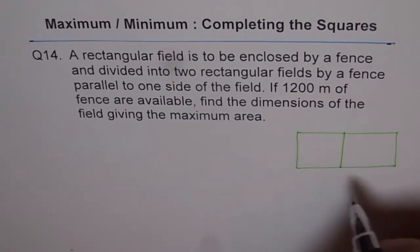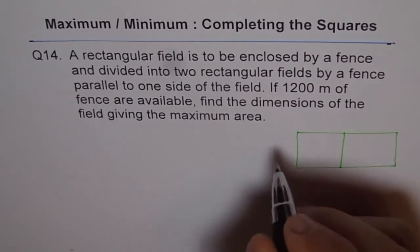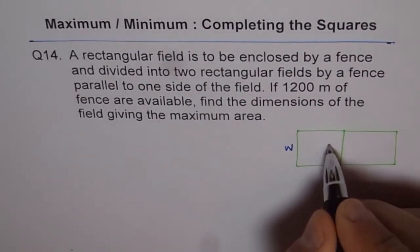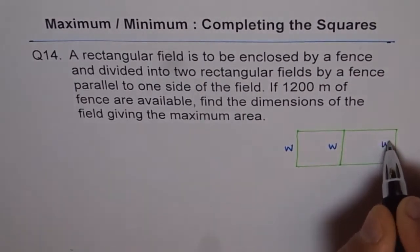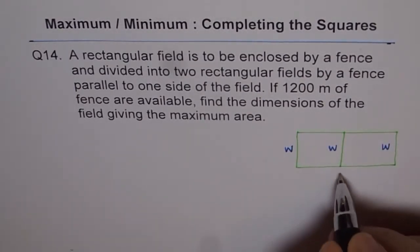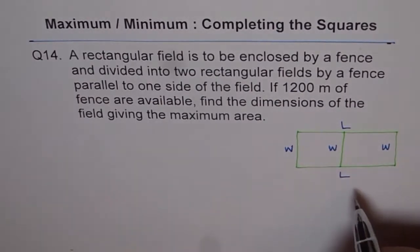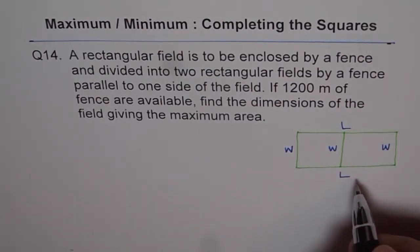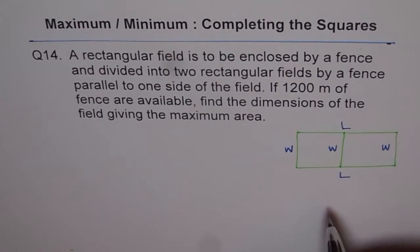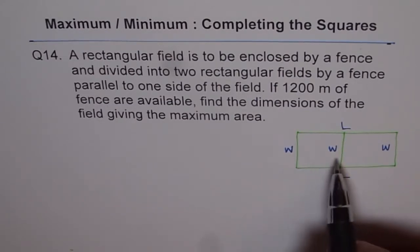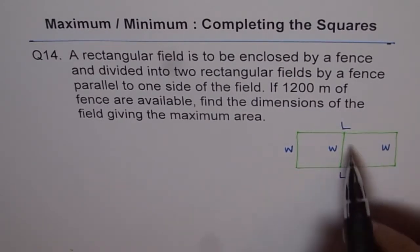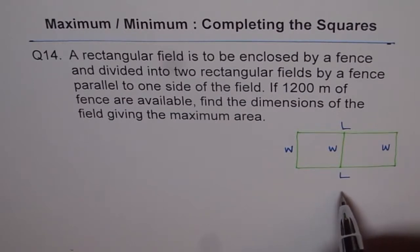And now let's define our variables. So we say let the width of the field be W. In that case, these will be W, right? And let the length be L. So this will be L. I'm not writing the let statement, but you have to write it, okay? Now, so our variables are defined, which is width is W, and L is length for the fence, right?